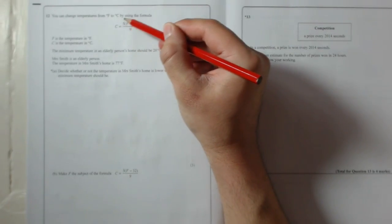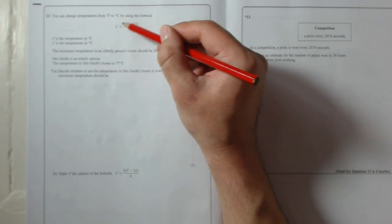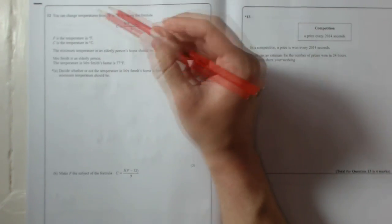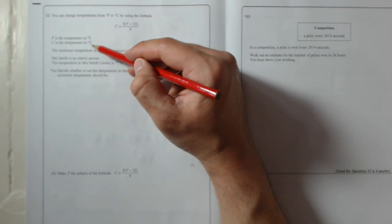Question 12. You can change temperatures from degrees Fahrenheit to degrees Celsius by using the formula C equals 5, open brackets, F take away 32, close brackets, over 9.